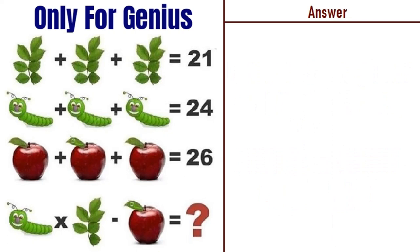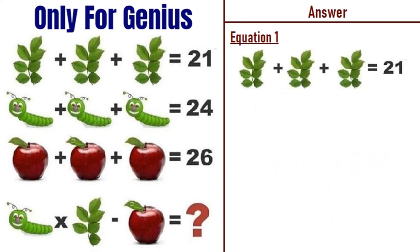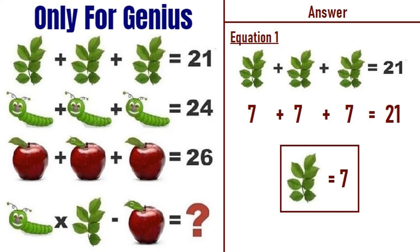Hope everyone has given their answer in the comment section. Now I will tell you the correct solution. Let's take equation number one, which says leaves plus leaves plus leaves equals 21. Seven plus seven plus seven equals 21, so leaves equals 7.